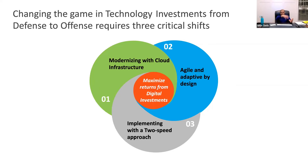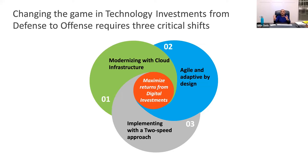Finally, implement using a two-speed approach — something I've been talking about for a number of years. Big bang implementations are a recipe for disaster in the VUCA and digital world because assumptions and conditions are changing so rapidly. At speed one, you pick specific high-impact use cases and use them to drive through the stack.